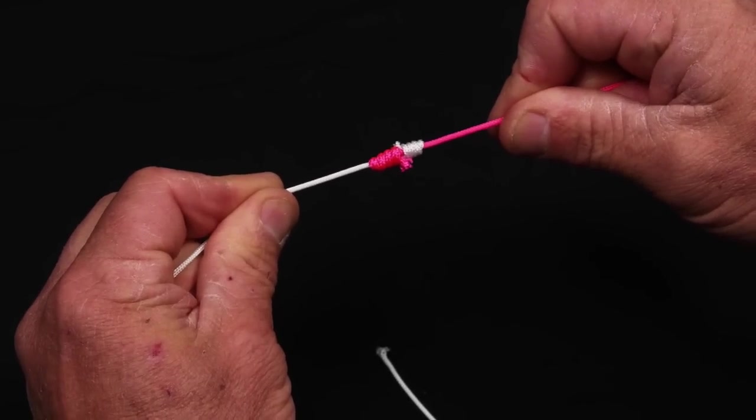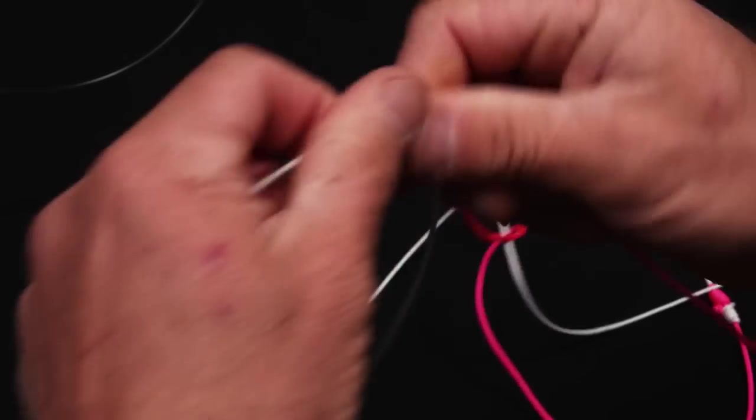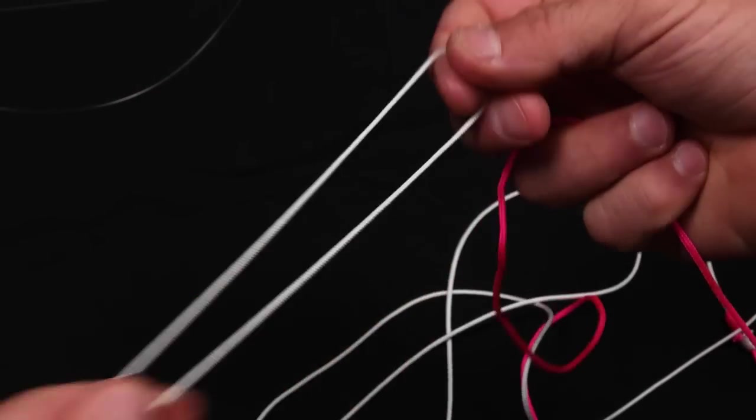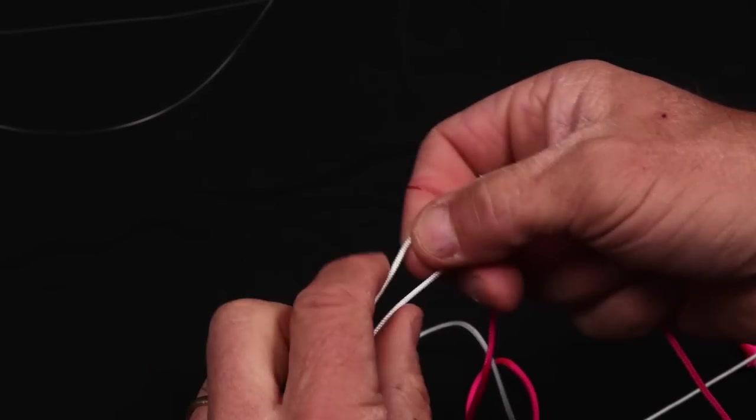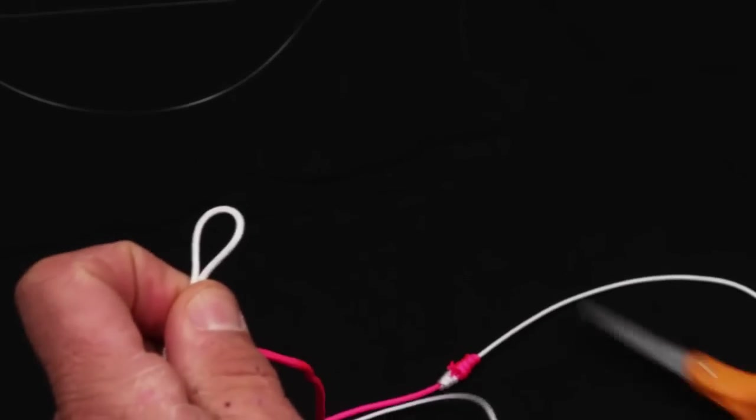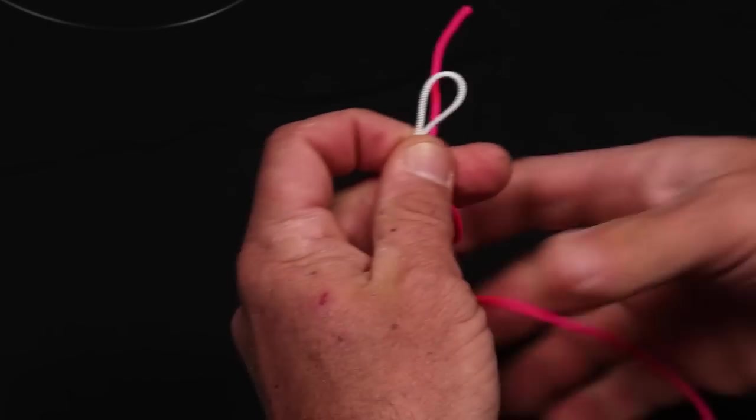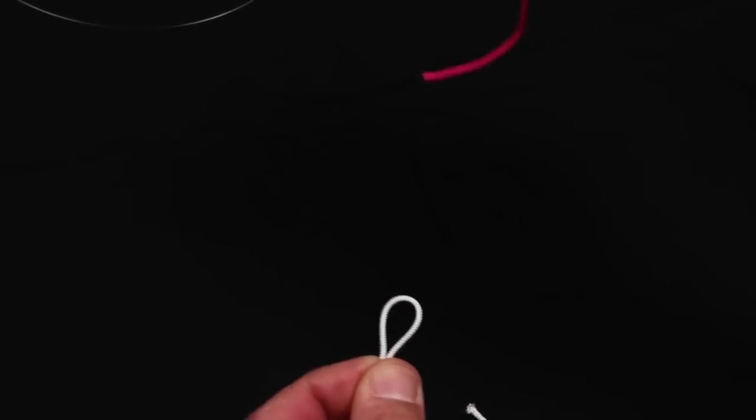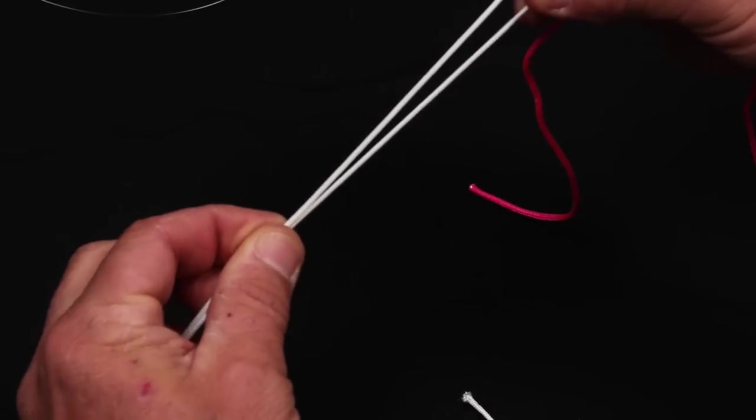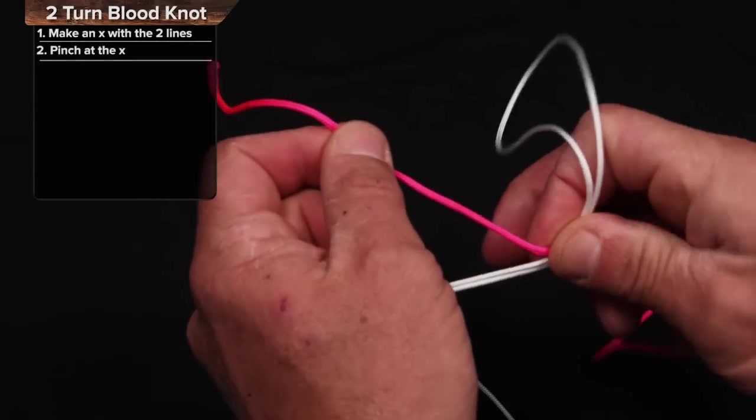I can also tie blood knots if I have something that's very much smaller. I can double the line either with a bimini or just in my hand like this and I can take the other side of this. This is what's called a two turn blood knot. Say I have 80 pound test with the pink, 20 pound with the white.